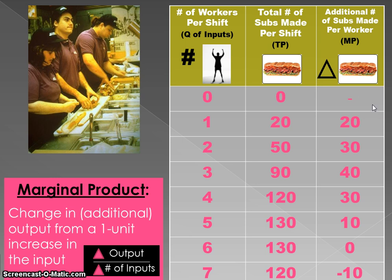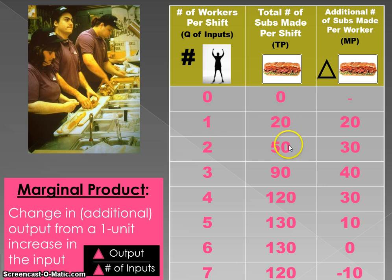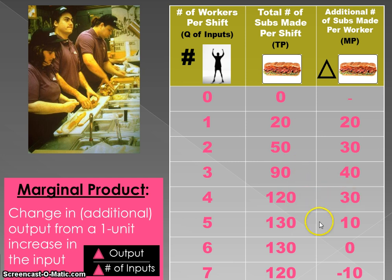I've added a third column to the data to show how marginal product is calculated. Marginal product tells us how many subs each worker added to total output. The first worker added 20 more subs than when there were zero workers, so the marginal product of the first worker is 20. The second worker: total product for two workers is 50, for one worker is 20, so the second worker added 30 subs. The third worker added an additional 40 (90 minus 50), and the fourth worker added an additional 30.